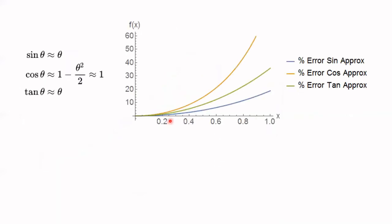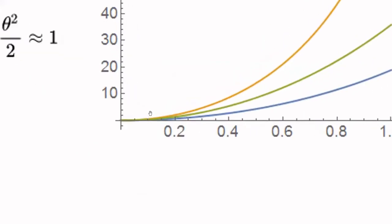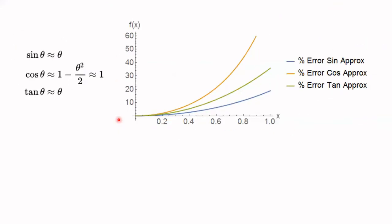Here are functions showing the percent error between the approximation and the true value of sine. You can see that for theta equal to 0.2, the error is less than 1%. I checked that on my own calculator and it's legitimate.